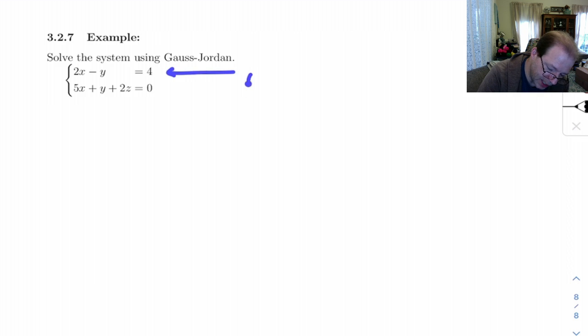First up, notice these are both planes in R3, and you can't multiply this by a constant and get this. So they're not parallel. So if you've got two planes and they're not parallel, they have to intersect in a line. So we know we're going to get infinitely many solutions.